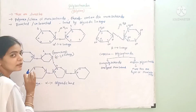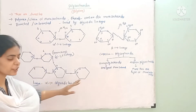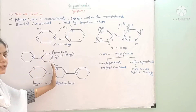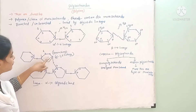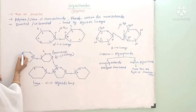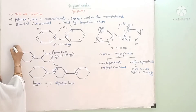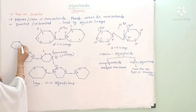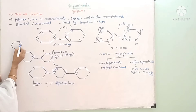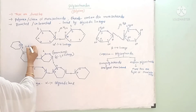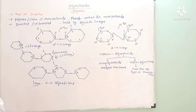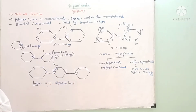For beta sugars, there is also beta 1,6 glycosidic bond. In linear regions, alpha 1,4 glycosidic linkage is used. At branching areas — between the 6th and 1st carbon — alpha 1,6 linkage is used for branching. Beta compounds use beta 1,4 linkage in linear regions.